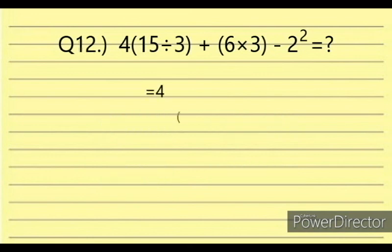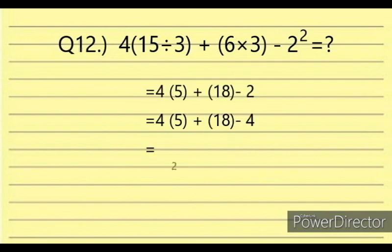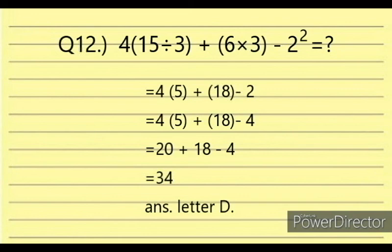Solution: 4 times (15 divided by 3 plus 18 minus 4). That equals 4 times (20 plus 18 minus 4), which equals 4 times 34... simplifying gives 34. The answer is letter D.